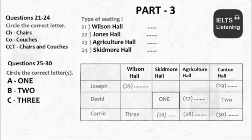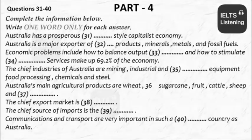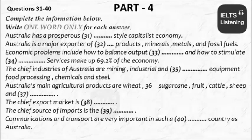You are going to hear some facts and figures about Australia. Now, listen carefully and answer questions 31 to 40. The country of Australia is made up of six states and two territories: the Australian Capital Territory, New South Wales, the Northern Territory, Queensland, South Australia, Tasmania, Victoria, and Western Australia. The national capital is Canberra.